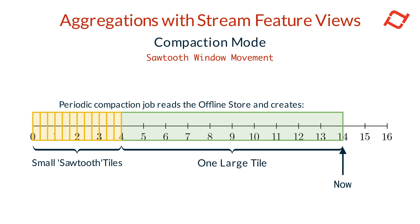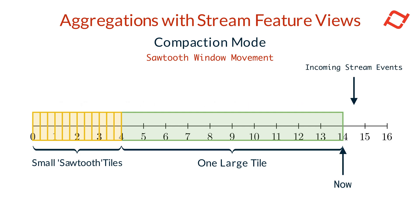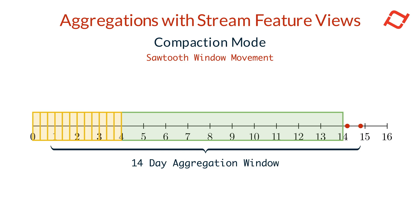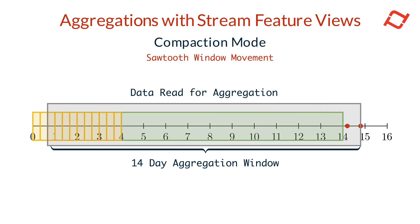The larger tile represents the bulk of the data, aggregating events from the majority of the time window for efficient reads. Sawtooth tiles are small tiles that cover more granular time periods at the trailing edge of the window. For example, in a 30-day window, Tekton may create a large compacted tile for the first 26 days and smaller one-hour sawtooth tiles for the last four days. As time progresses between compaction jobs, fresh data is continuously ingested from new stream events at the leading edge of the window. When a query is made, Tekton combines the most recent real-time events not yet compacted into tiles with the large compacted tile and smaller sawtooth tiles.